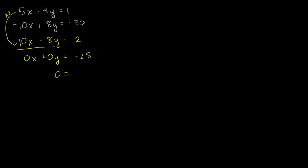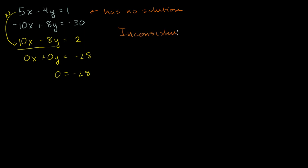So we essentially get 0 is equal to negative 28. We know that's not true — this can never be true. We're getting an inconsistent statement. When you solve a system of equations and you get a statement like 0 equals negative 28, or 5 equals 7 — two things that clearly don't equal each other — we call that an inconsistent system, and it will have no solution.